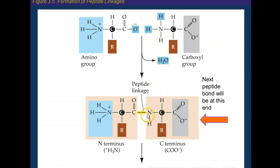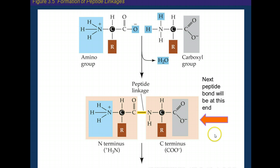We refer to the two ends as the N or amino terminus, which you can see here, and the carboxy terminus or C terminus over here. And that concludes our talk about amino acids.